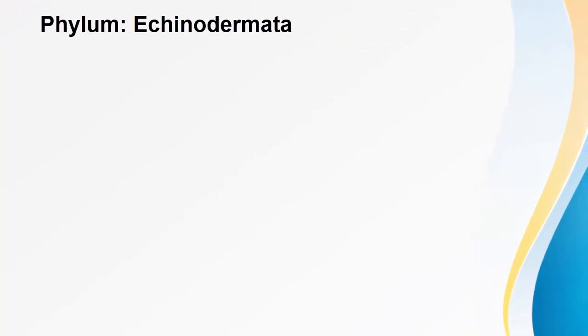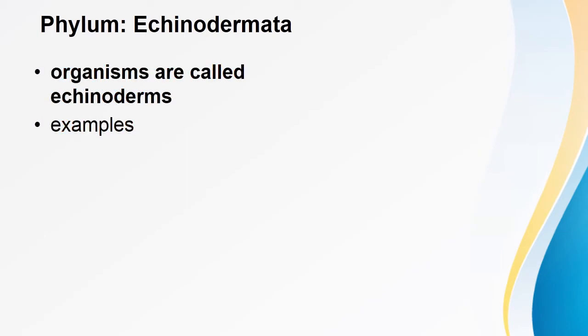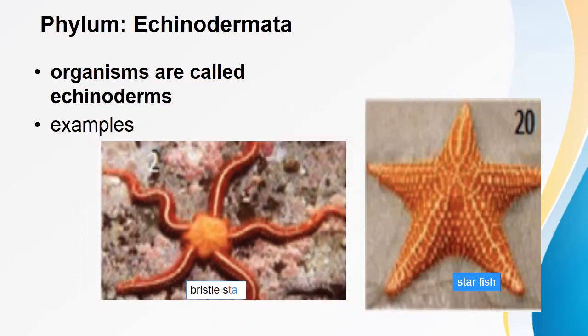Phylum Echinodermata — organisms in this phylum are called echinoderms. Examples include starfish and brittle star. Characteristics: they have unsegmented bodies with radial body symmetry. Their bodies have five arms. The body wall has three layers of cells. They have tube feet for locomotion and capturing food. They have spiny skin with hard plates. They have a water vascular system instead of a blood circulatory system.